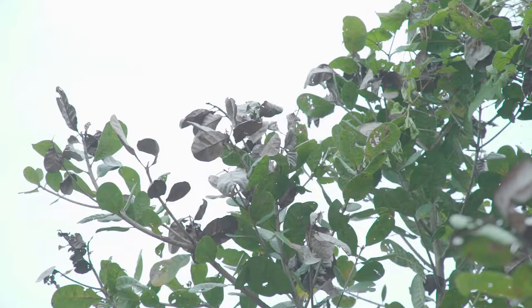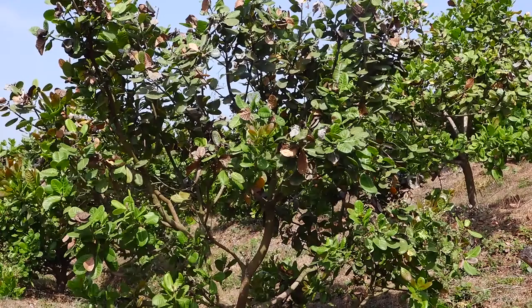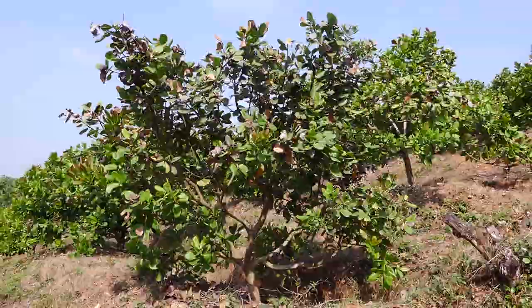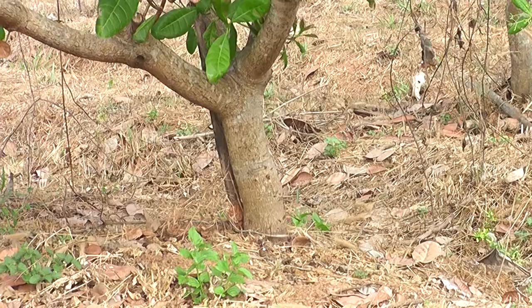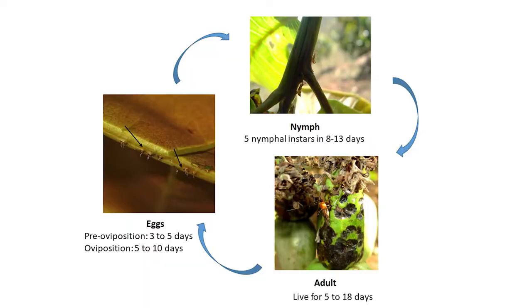Each insect can damage up to three or four shoots or panicles, leading to heavy loss in yield. Severe infestation by TMB results in a burnt-up appearance of the trees in the field — that is, total dying of shoots. If timely management measures are not taken, a damage of 25 to 30 percent can occur, and during outbreak situations, even 100 percent yield loss may be expected.